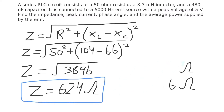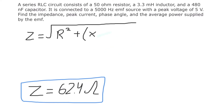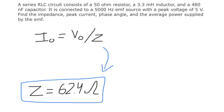Now we need to find the peak current. The formula for peak current in an RLC circuit parallels Ohm's law: the peak current I₀ equals the peak voltage V₀ divided by the impedance Z. This is analogous to I equals V over R in a DC circuit, but in an AC circuit we use the impedance instead of resistance. We just calculated the impedance, so we're ready to use it.